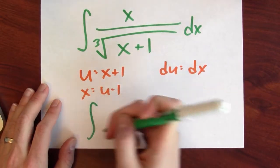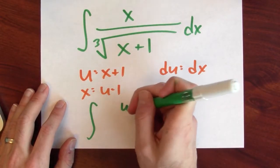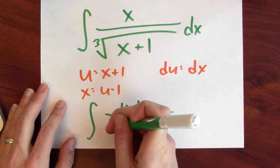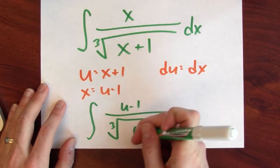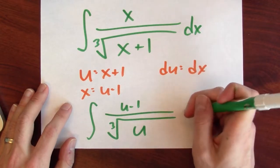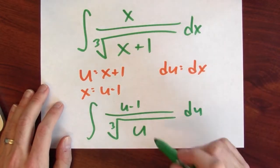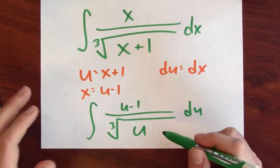Instead, this becomes the anti-derivative of u minus 1, still cube root, but instead of x plus 1, it's now of u, and the dx becomes du. I could actually do this, but I'm not going to head down that path. Instead, I want to show you a trick by which you can get rid of the radical altogether.